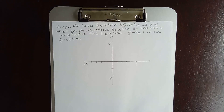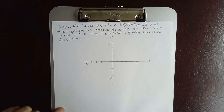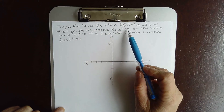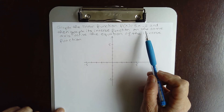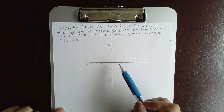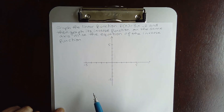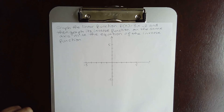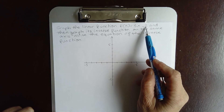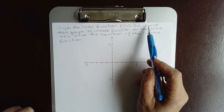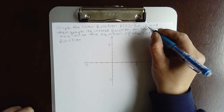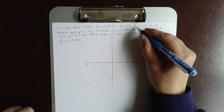In this problem we'll be graphing a linear function and its inverse on the same axis. We're going to graph the linear function f of x equals 3x minus 2, then graph its inverse on the same axis, and write the equation of the inverse function. For f of x = 3x minus 2, the y-intercept is negative 2 and the slope is 3.